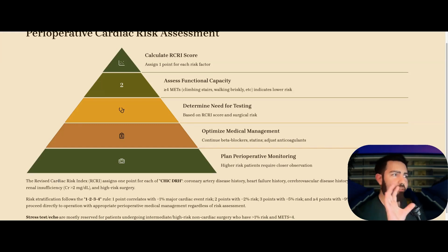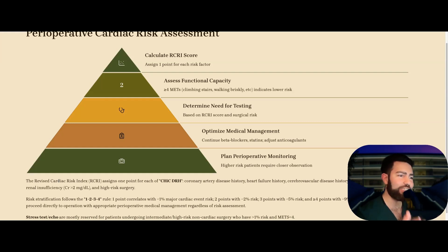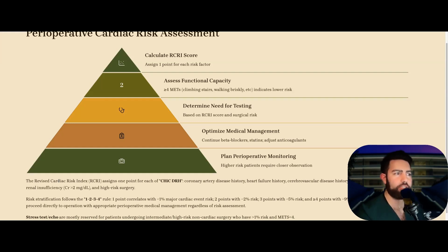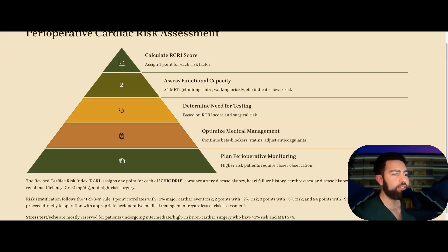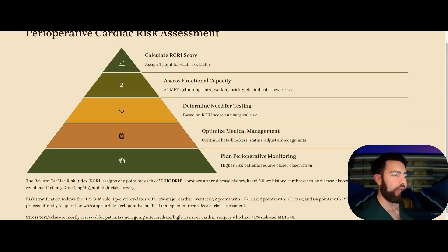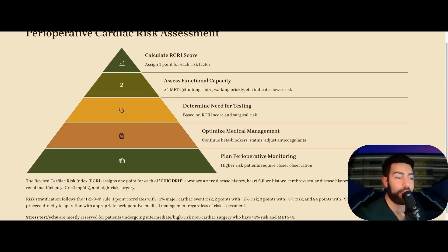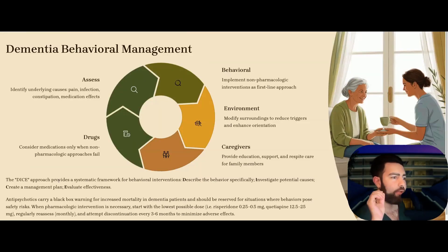Add to that the METs assessment, which is used to assess functional capacity. If anyone has less than 4 METs — meaning they probably cannot climb stairs or walk briskly — and they have an RCRI greater than 1% and are undergoing a non-urgent, non-cardiac surgery that is intermediate to high risk, then they need workup such as a stress test or echocardiogram.